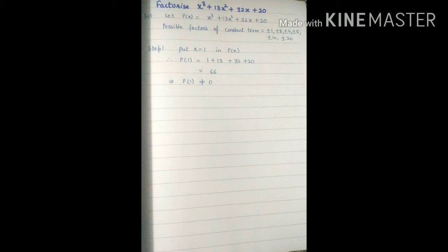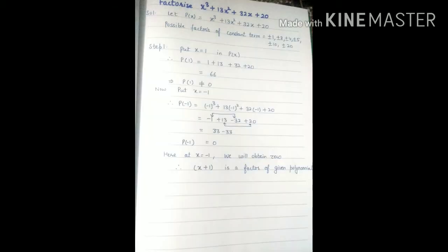Let's start with one. Here P(1) is not equal to zero. Now let's try it with -1. Here P(-1) = 0, means at x = -1 we will obtain zero. This means x + 1 is a factor of the given polynomial.